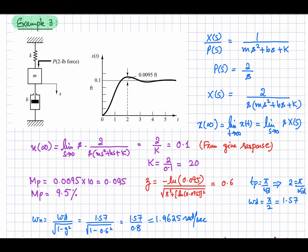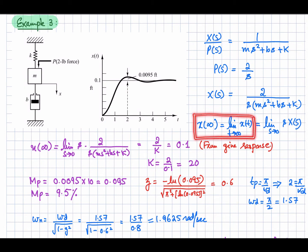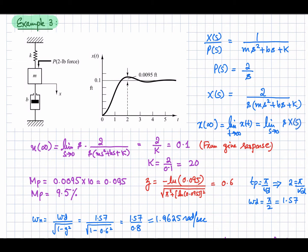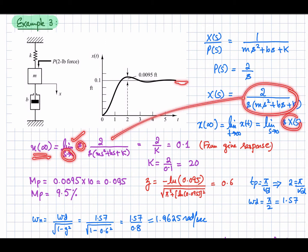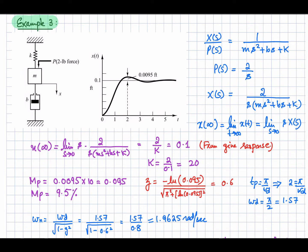We want x at time t approaching infinity, which gives the steady state value in the time domain. Using the final value theorem in the s-domain, the steady state equals the limit as s approaches zero of s·X(s), where X(s) is the Laplace transform of the response. Using this final value theorem, x(∞) equals limit as s→0 of s·X(s). Substituting the expression for X(s) and simplifying — with s cancelling and s=0 making certain terms vanish — we are left with 2/K.